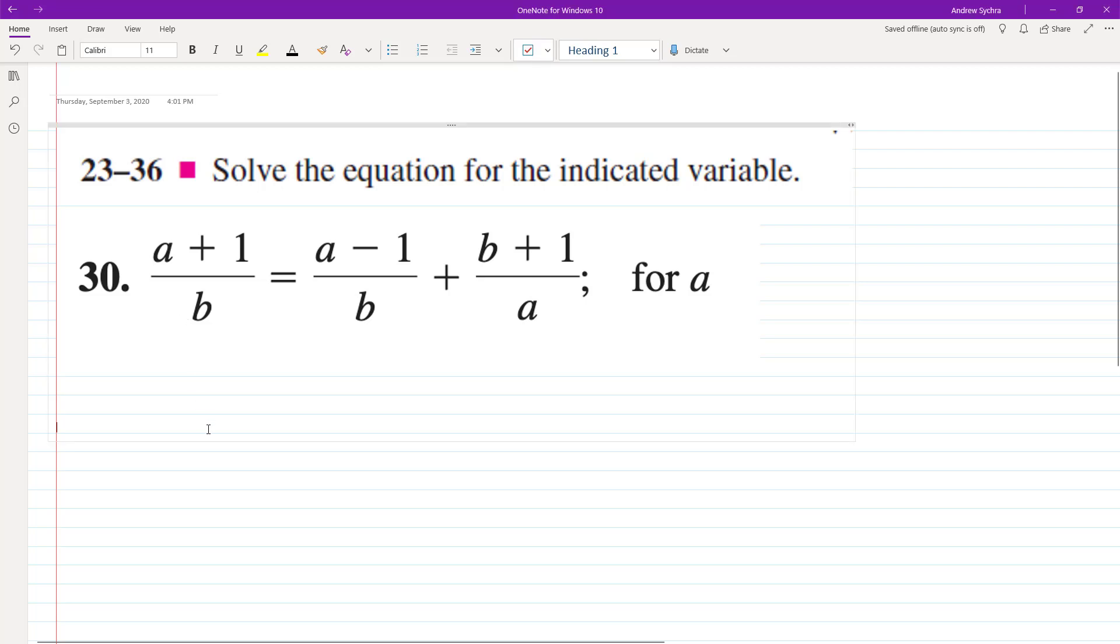Alright, so let's go ahead and solve this problem for a. First thing we'll do is subtract this term with the B in the denominator from the left side: a plus 1 minus a minus 1, and both are over B.